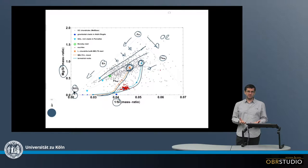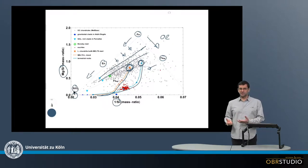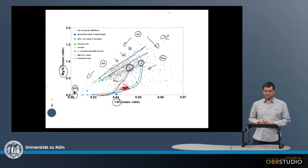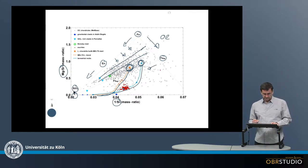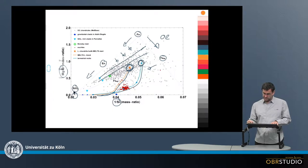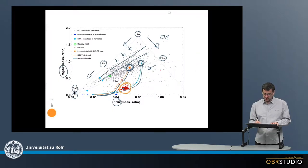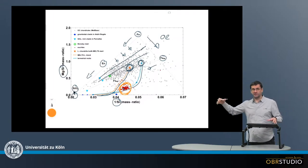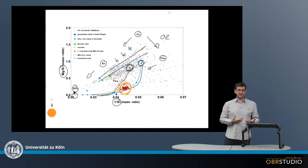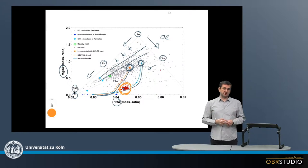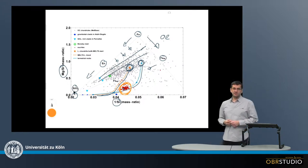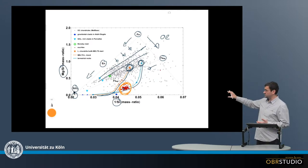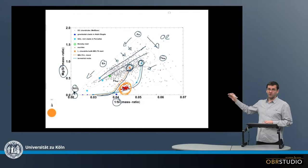So clearly the chondrules do not reflect the composition of a differentiated parent body. This can be contrasted with the red points here — these are eucrites, which come from presumably Vesta, a large asteroid where differentiation likely occurred. And these eucrites do reflect differentiation, because they plot on such an evolution trend. But the chondrules do not.